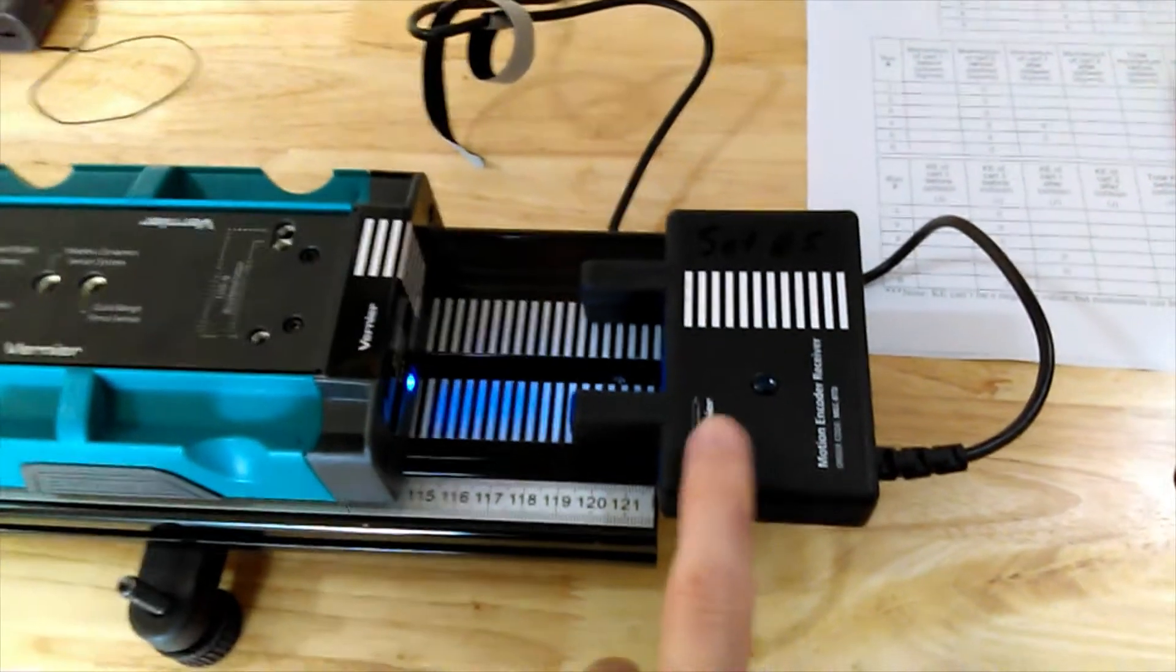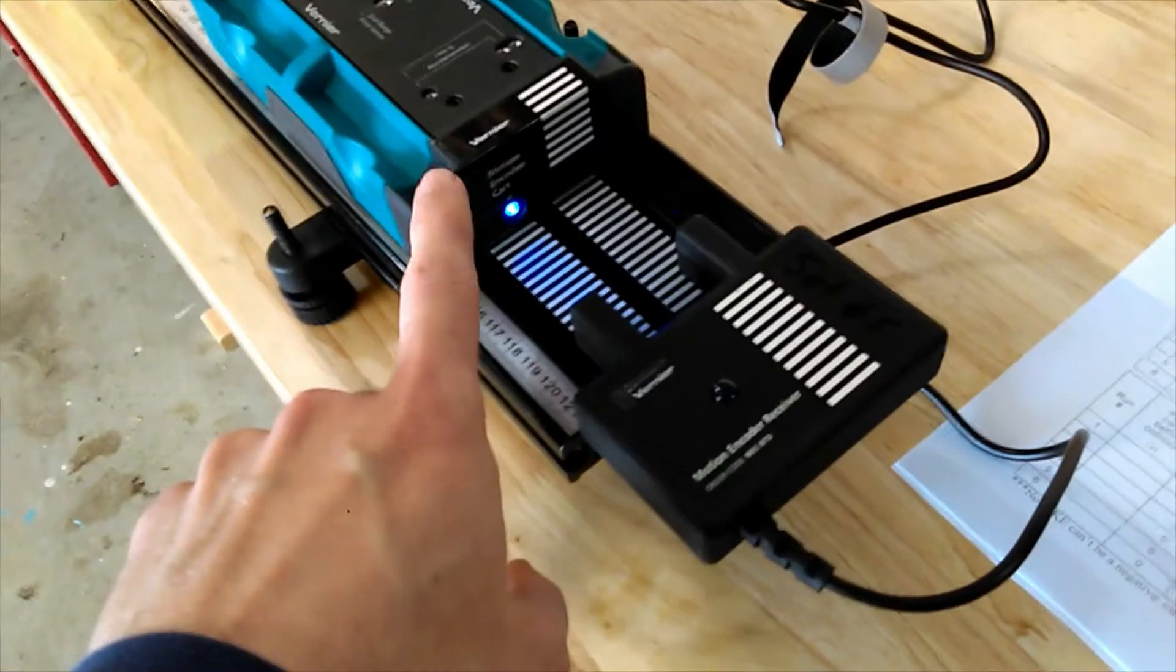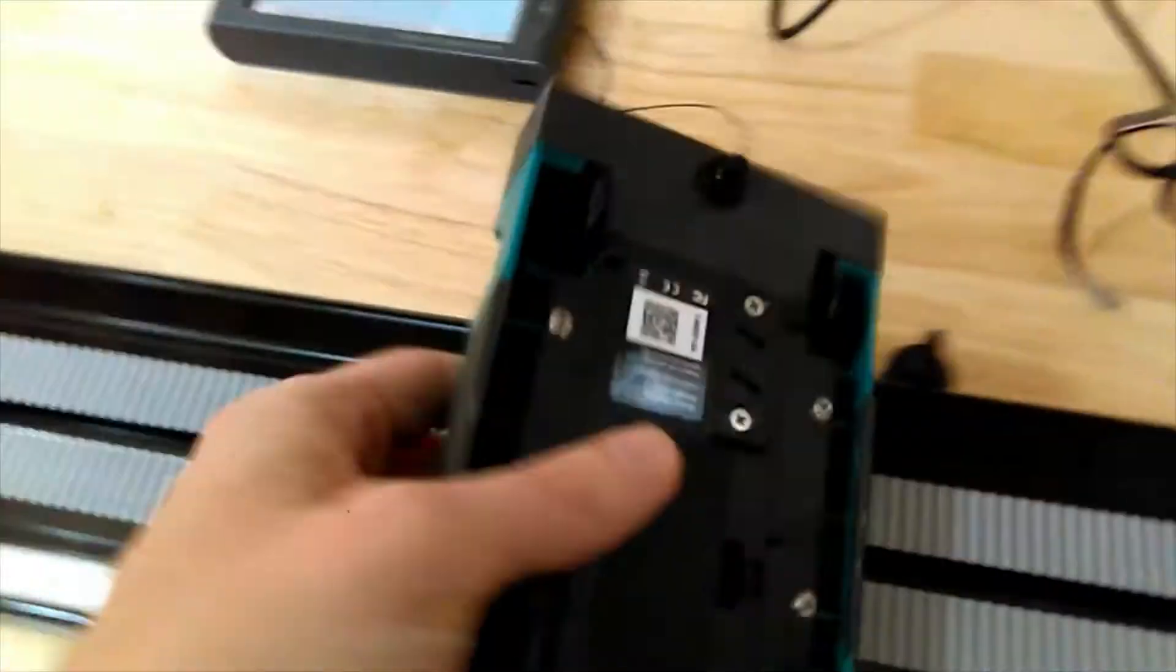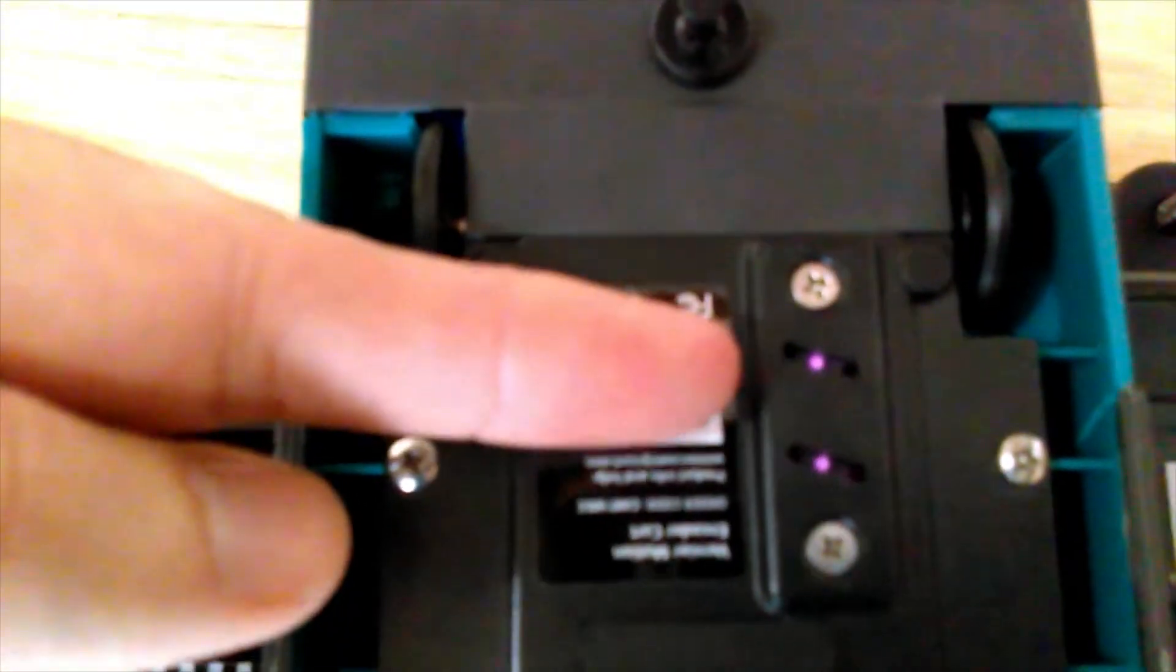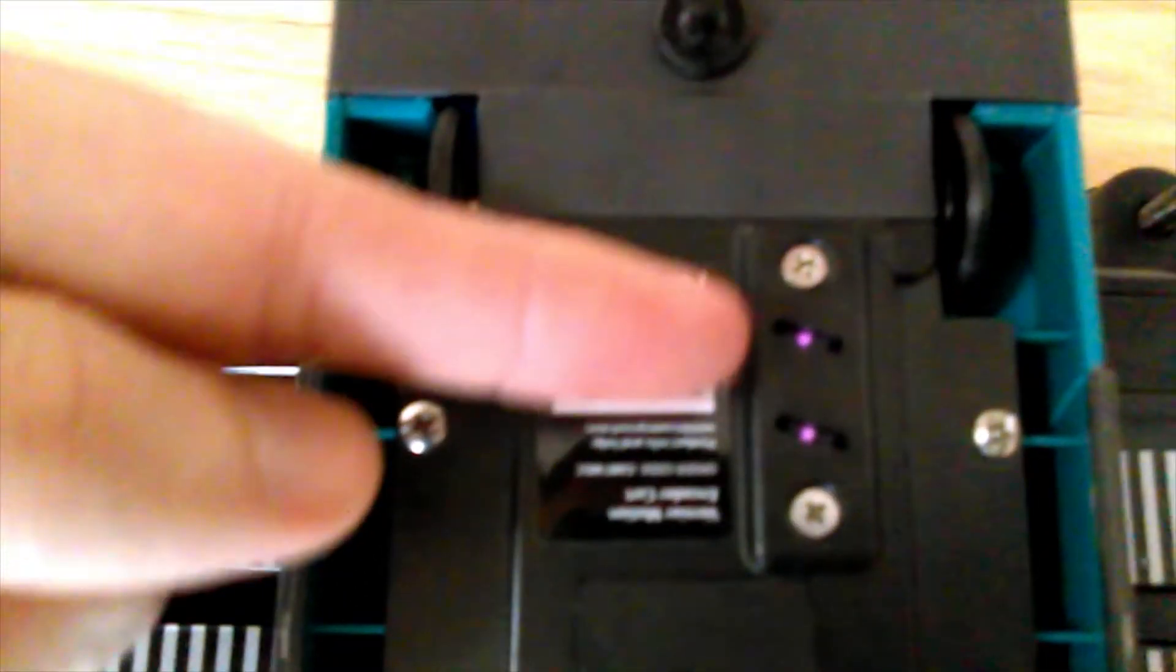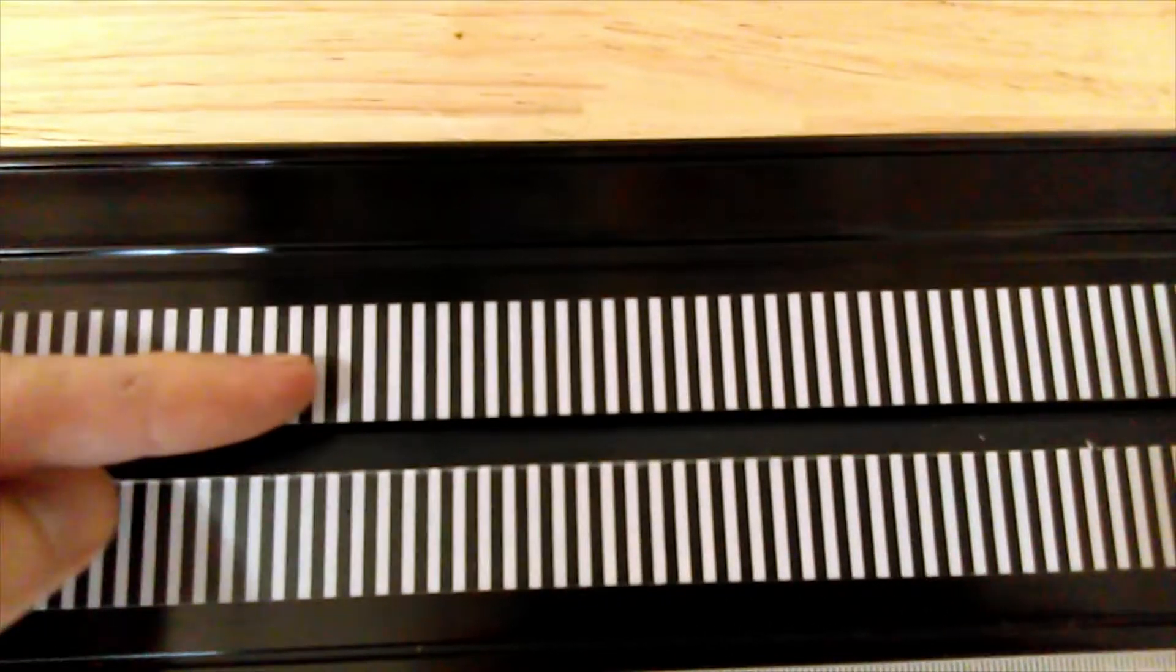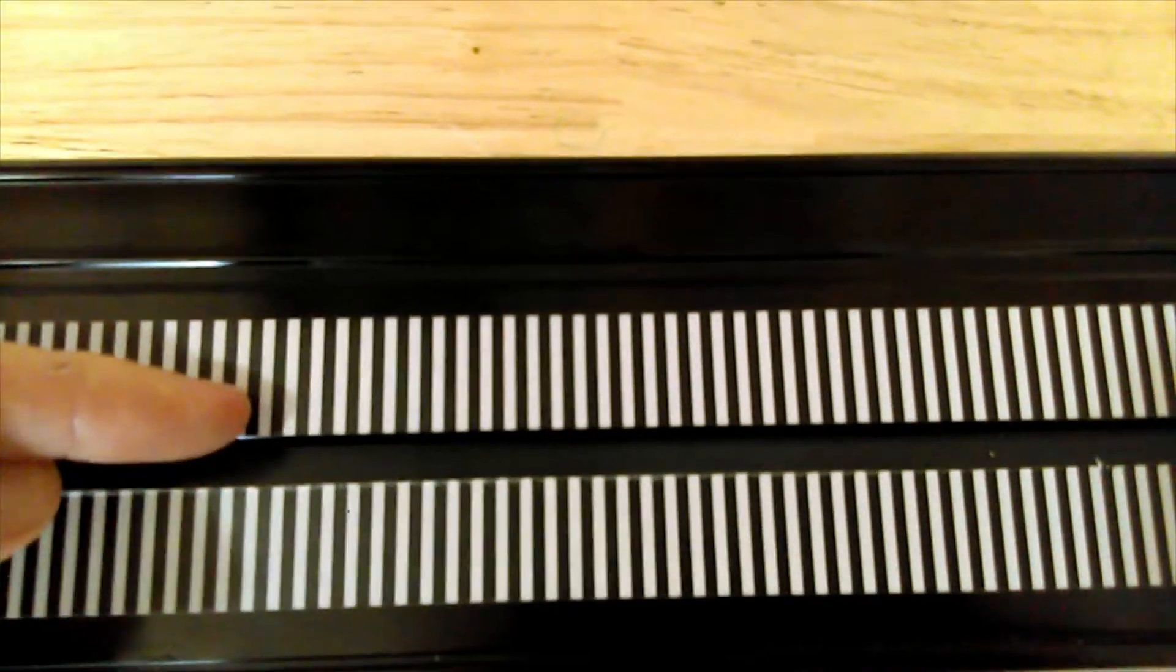It's tracking using this motion encoder here on the end. This motion encoder is talking to this car that I have turned on using Bluetooth. On the bottom of this car, you can see the little sensors. You can actually see the infrared light on my camera. It's tracking these black and white lines as it passes over them to determine how far it's traveled.